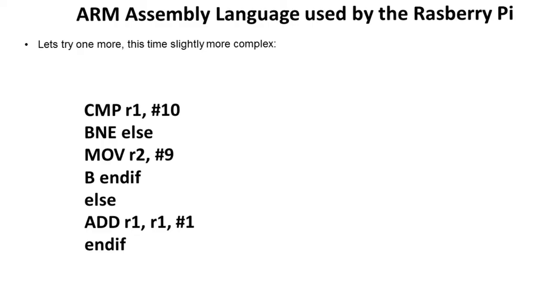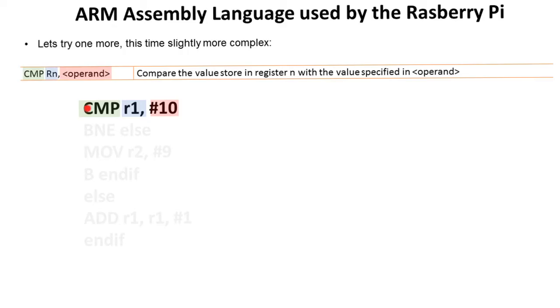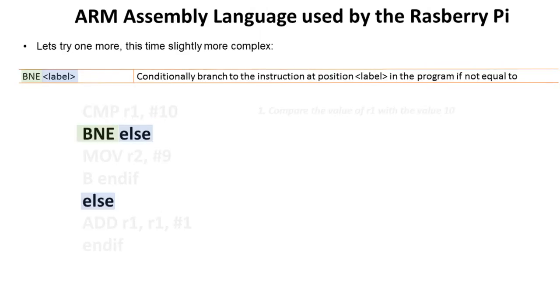OK, let's step through it together then. So this first line is a command to compare. We're going to compare the value stored in here with the value specified in the operand. So whatever's stored in here, we're going to compare with 10. We've then got a branch with a branch label. Conditionally branch to the instruction at label, and we see label down here in the program if not equal to. So having done this comparison, if this comparison is not equal to, this command makes us branch to wherever this label is. So we'll come down here. Otherwise, we're going to do these next two lines.